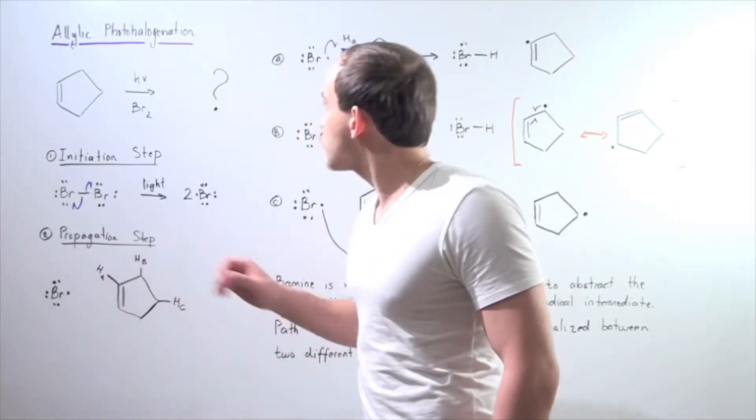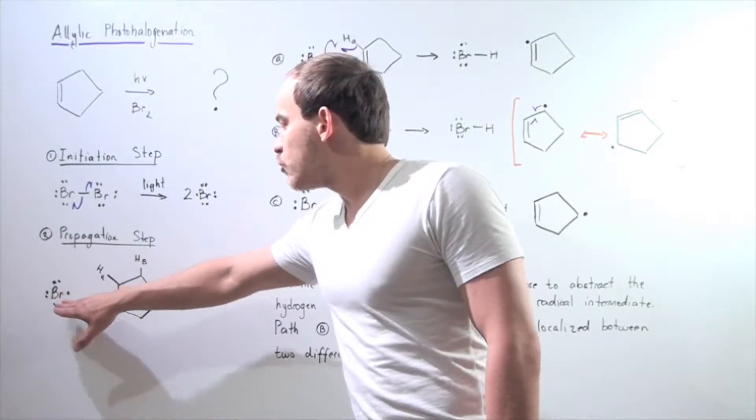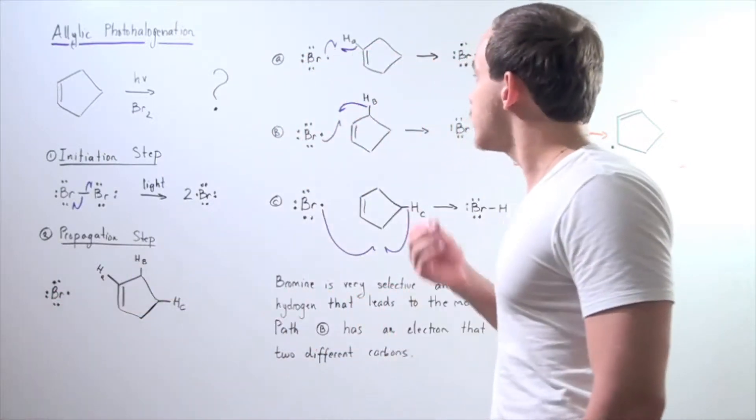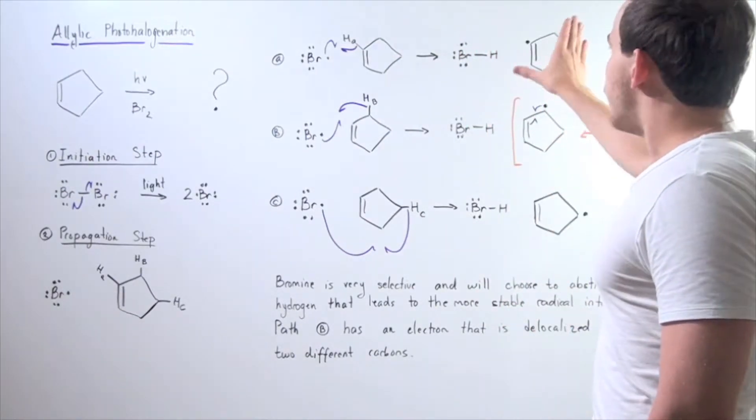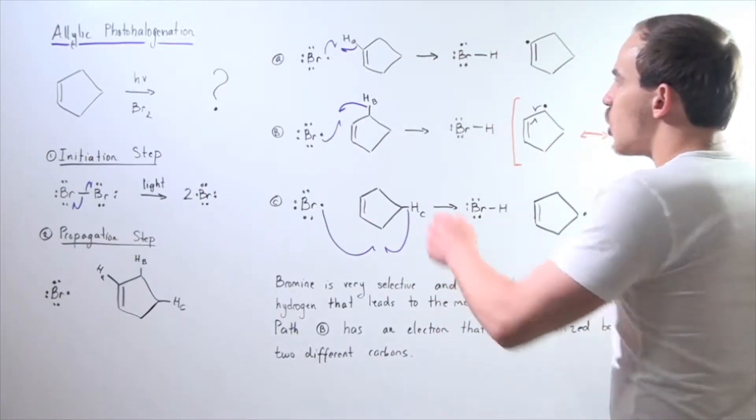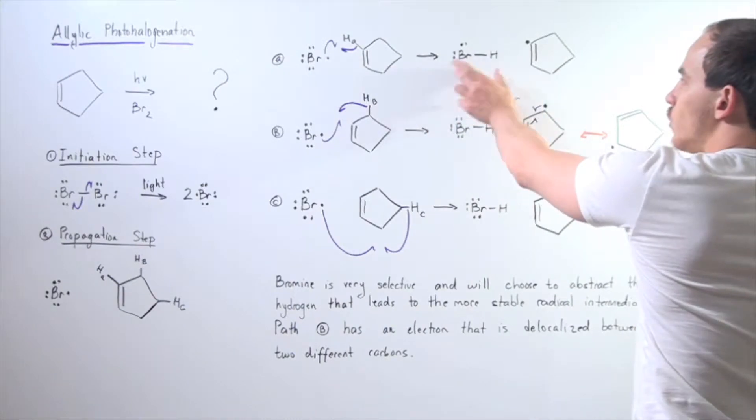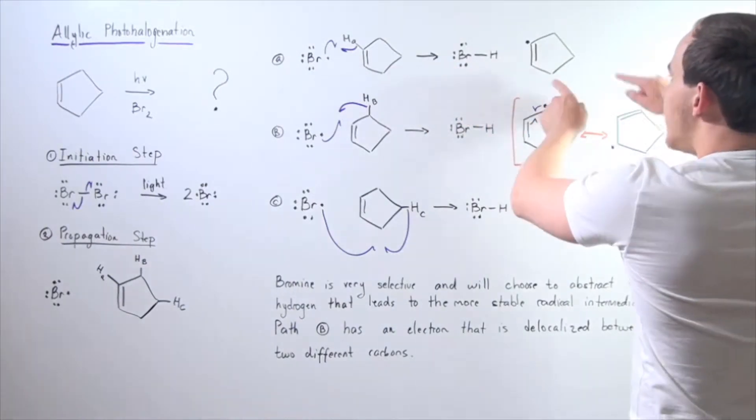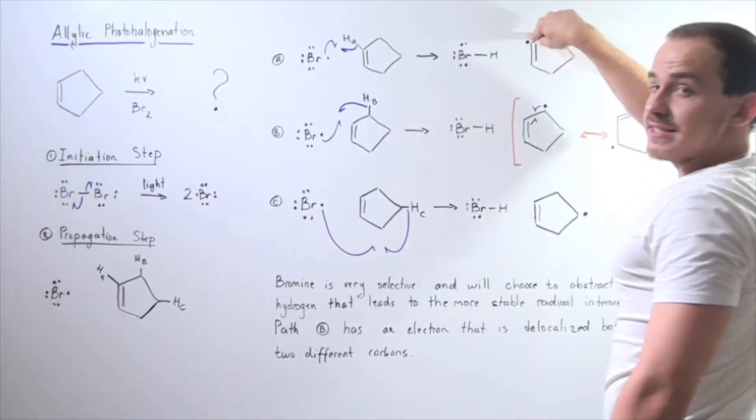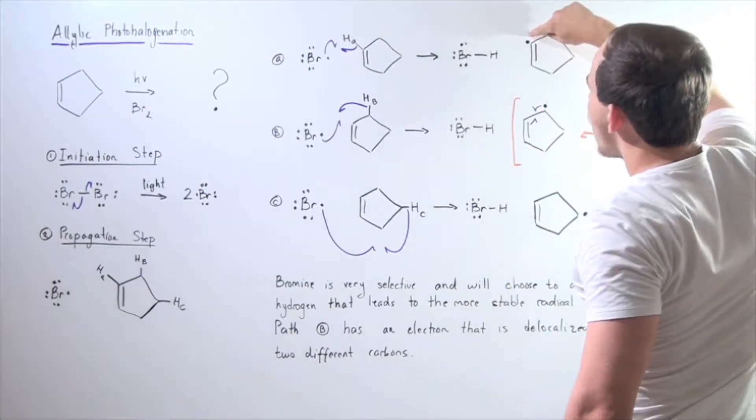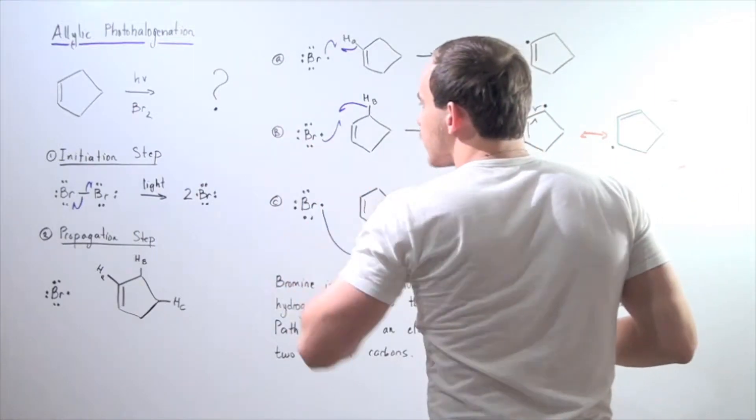So let's look at the first one, pathway A. What happens if our chain-carrying radical, the bromide radical, decides to abstract this atom, the H subscript A? Well, we get the following products. There is a bond that forms between the bromide and HA. We form the following molecule as well as this radical, this new chain-carrying radical, where we have this single electron on the carbon that has a double bond, a pi bond.